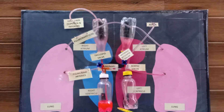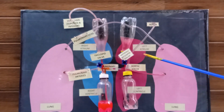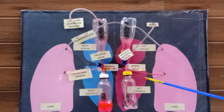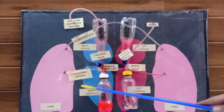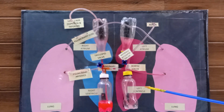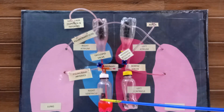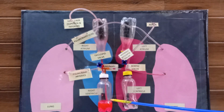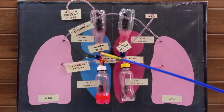The heart is divided into four chambers. Each side has an atrium — the top part — and a ventricle — the bottom part. The atrium receives the blood and sends it to the ventricles, and the ventricles pump the blood. There are four valves too.